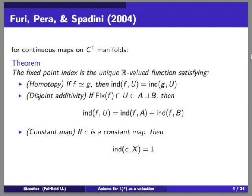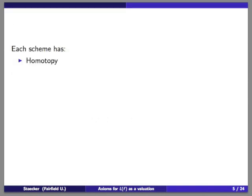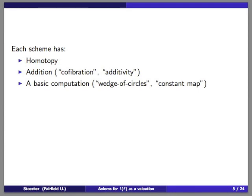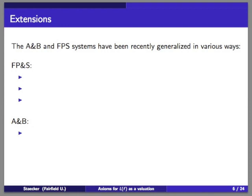To summarize both schemes: they have a homotopy invariance property; some kind of addition — in Arkowitz-Brown it was the co-fibration axiom, in Furi-Pera-Spadini it was disjoint additivity; a basic specific computation allowing the calculation in a certain situation; and Arkowitz-Brown also has the commutativity property, which was also in O'Neill's original axioms. There were some other systems of axioms, most looking similar to one or the other of these or some mixture of them.